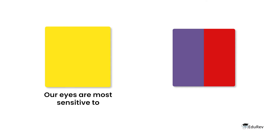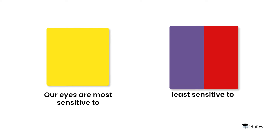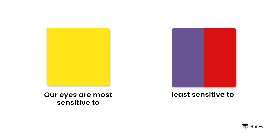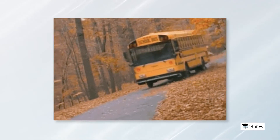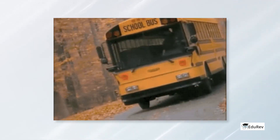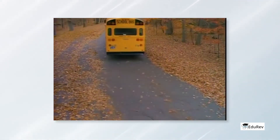Our eyes are most sensitive to yellow colour and least sensitive to violet and red colour. Due to this reason, commercial vehicles are painted with yellow colour, as projected in the video.